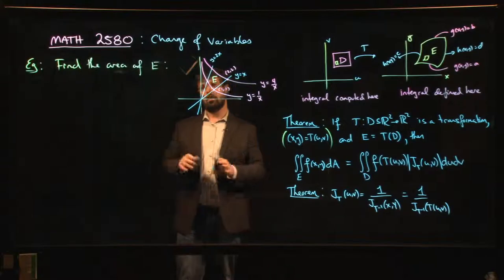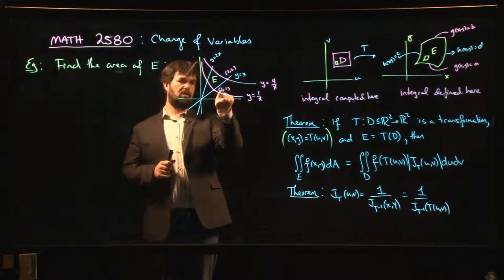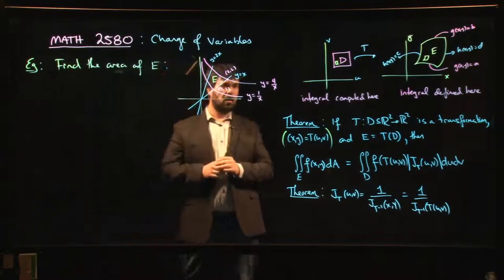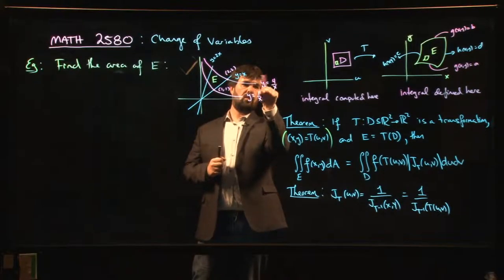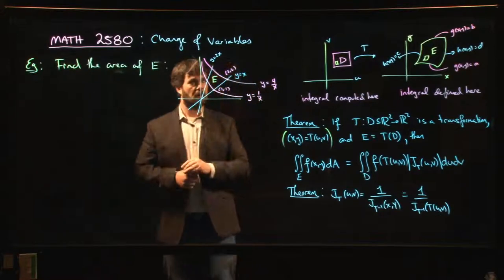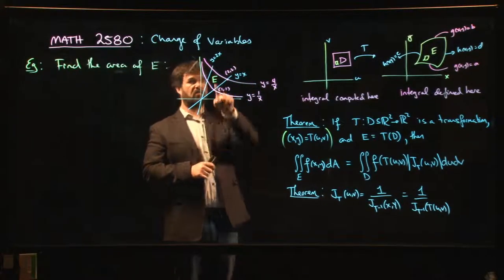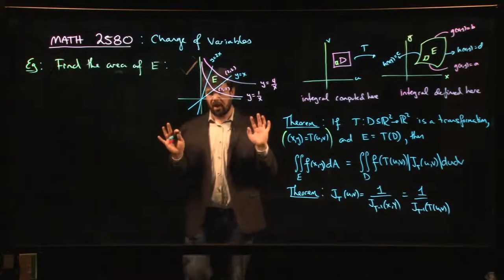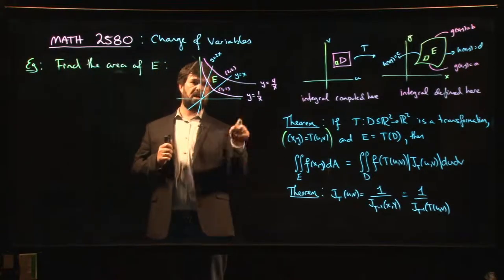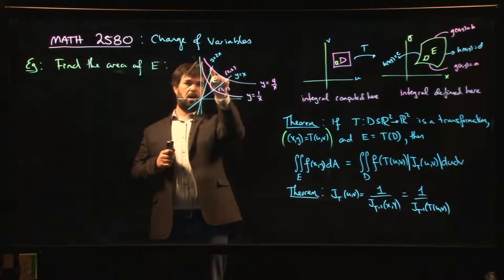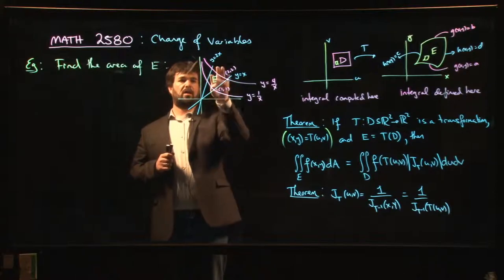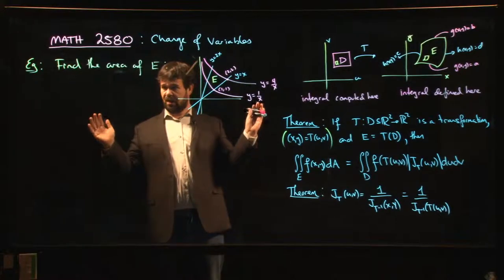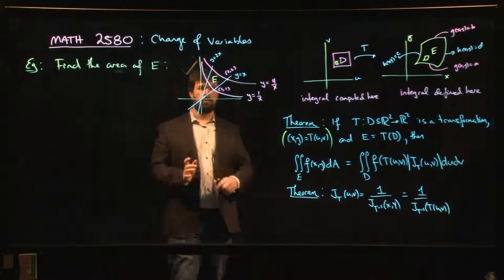There are a couple of approaches. We could find all four points of intersection — I found two of them: (1,1) and (2,2). We could get the other ones too. If I put y equals 2x in, then 2x squared equals 4, so x squared is 2, x is root 2, y is 2 root 2. But the only reason I'd do that is to set up the integral in terms of x and y, which would require carving this region into several pieces — upper curve minus lower curve — and that seems pretty gross.